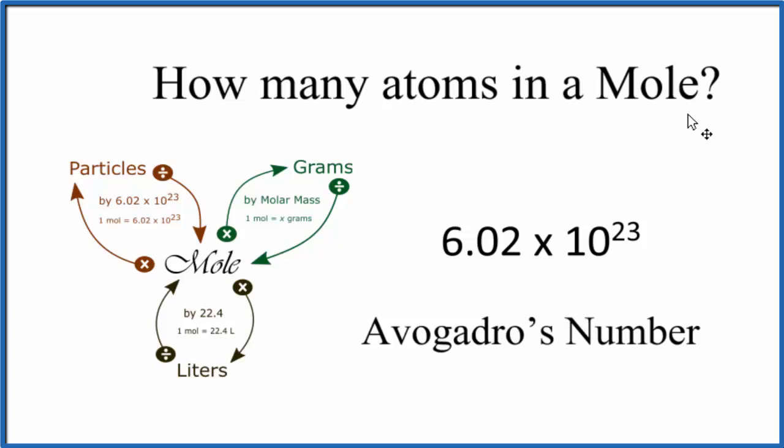The big idea here is if we have a mole of atoms or molecules or ions, it's going to be 6.02 times 10 to the 23rd of those ions, atoms, or molecules. This is Dr. V discussing how many atoms are in a mole. Thanks for watching.